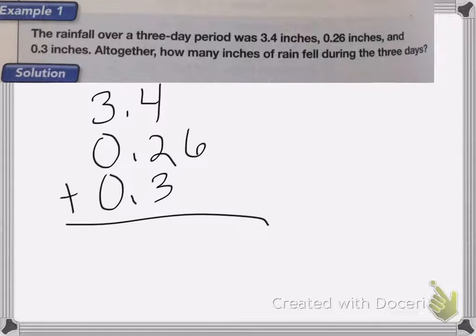The decimal point drops straight down. Now we're going to add them up like you would add any other number. So 6 plus nothing is 6, 4 plus 2 is 6, plus 3 is 9, and we bring the 3 down, 3 plus 0 is 3. So it fell 3.96 inches of rain over the course of three days.